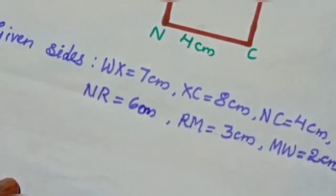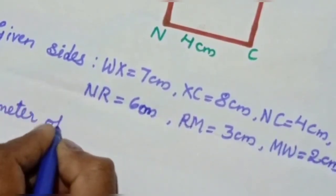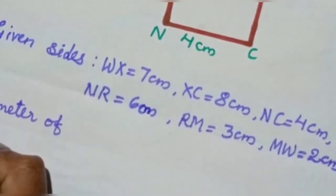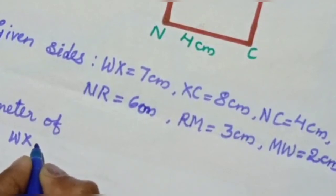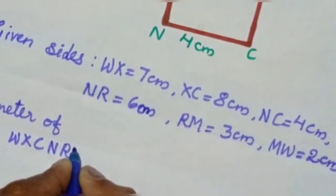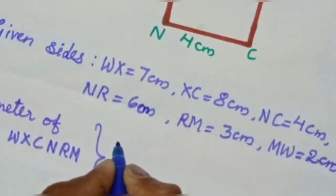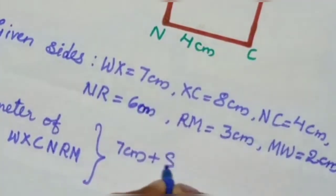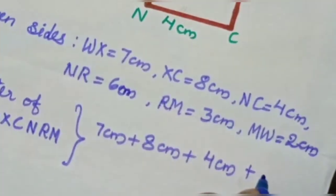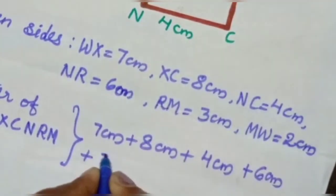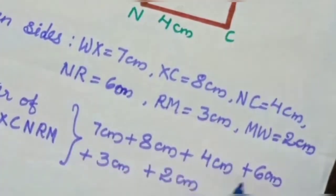Now we find the perimeter of figure. Perimeter of figure WXCNRM equals WX equals 7 cm plus XC 8 cm plus NC 4 cm plus NR 6 cm plus RM 3 cm plus MW 2 cm. Now we add all size.